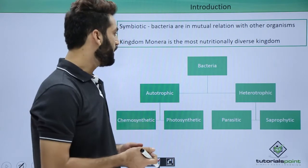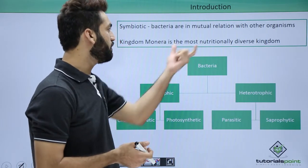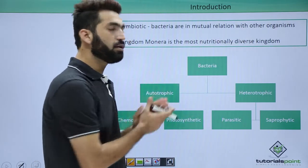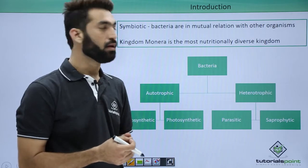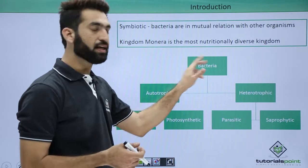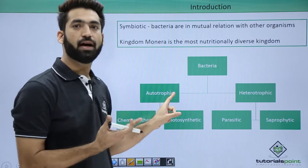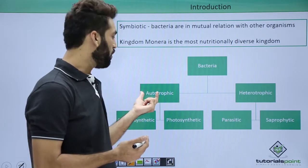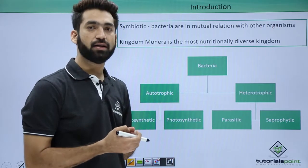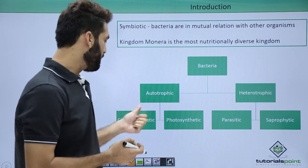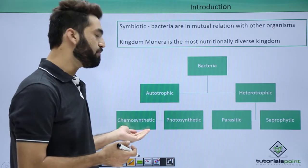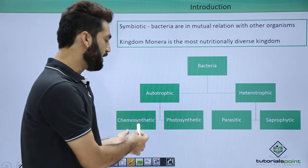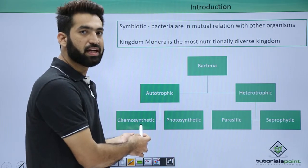Bacteria are the most nutritionally diverse kingdom — you have every sort of nutritional diversity here. Bacteria can be autotrophic. Autotrophs are organisms that can prepare their own nourishment. 'Trophic' means nutrition and 'auto' means self. They can draw their nourishment by photosynthetic means — in the presence of light — or by chemosynthetic means — in the presence of some chemical energy.